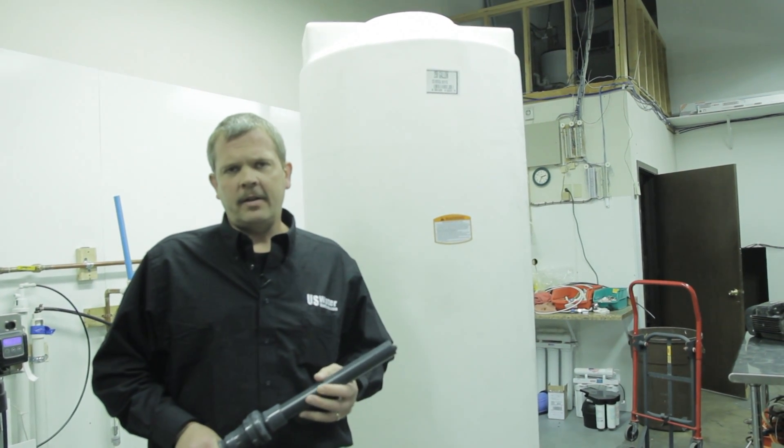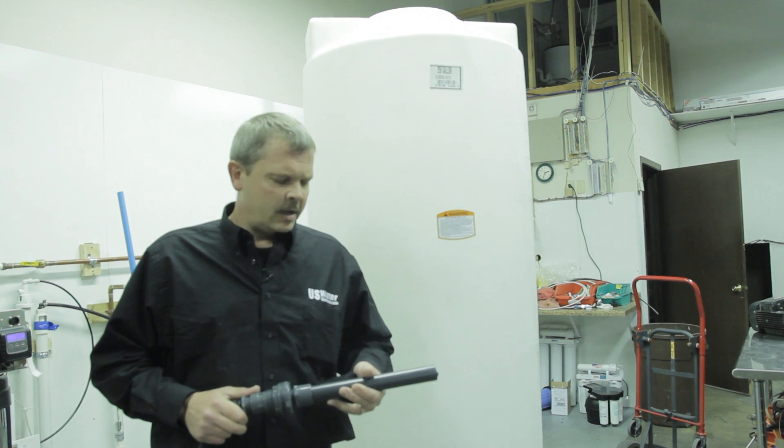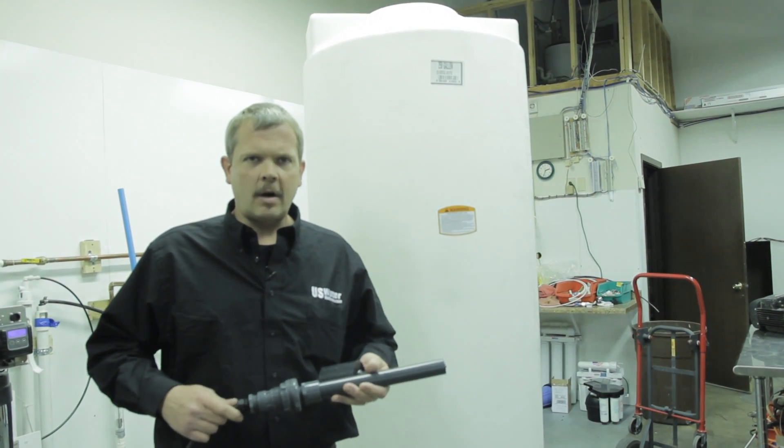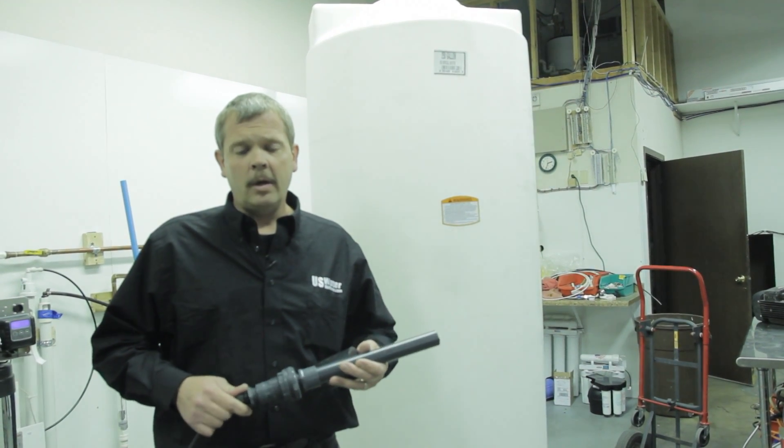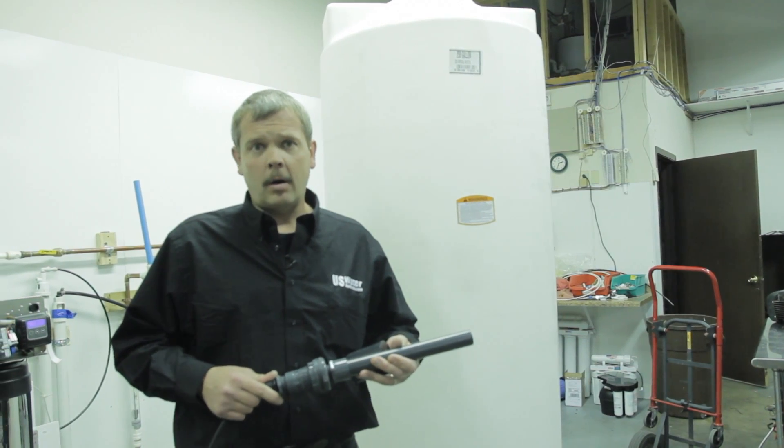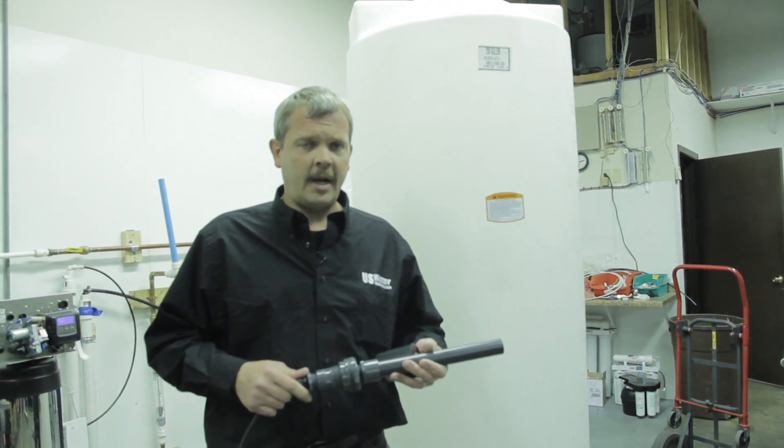Typically, if you buy an atmospheric tank to go in conjunction with your RO system, you're going to need some type of float switch to shut the RO off once the tank is full. This float switch will also turn the RO on once the tank level comes down.